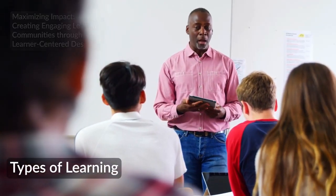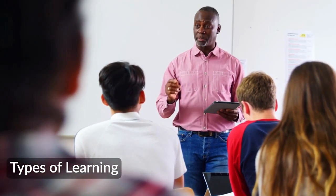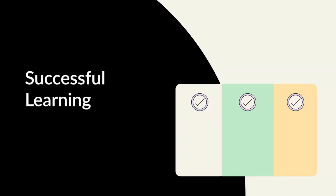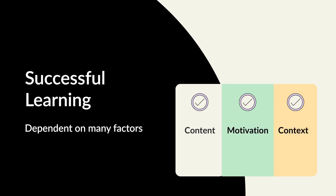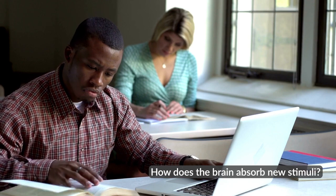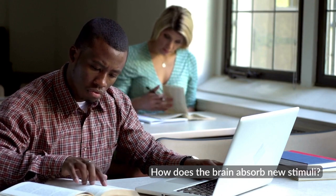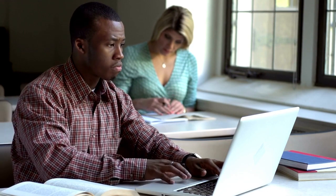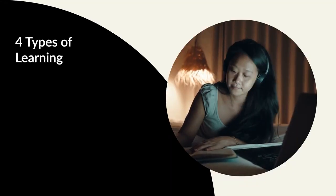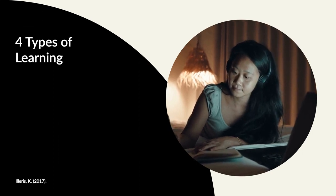As learning facilitators, we intuitively know that successful learning is dependent on many factors, including content, motivation, and context. What is often less clear is exactly how the brain absorbs new stimuli acquired in a given learning experience. As an aid in understanding this part of the learning acquisition process, let's turn our focus to four types of learning as described by Illeris.